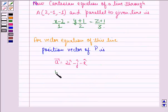Also, vector B equals i cap plus 2j cap plus 3k cap.